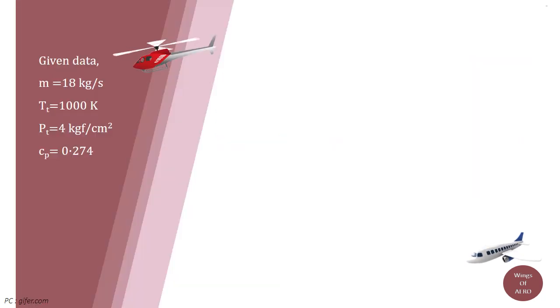Given data: Mass flow of gas through turbine m is equal to 18 kg per second. Total temperature T subscript T is equal to 1000 K and total pressure P subscript T is equal to 4 kg force per cm². Mean specific heat at constant pressure C subscript P is equal to 0.274.